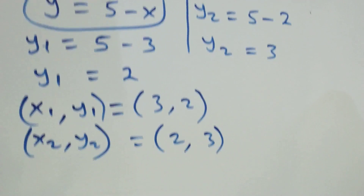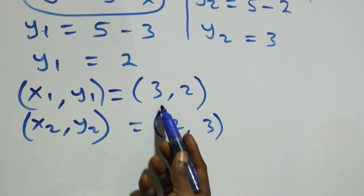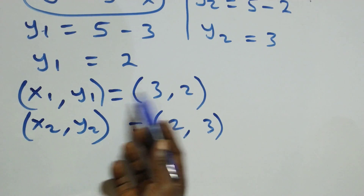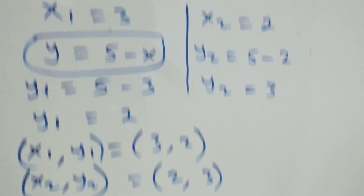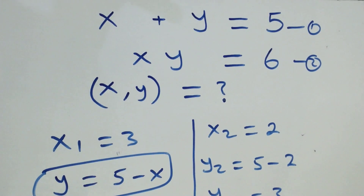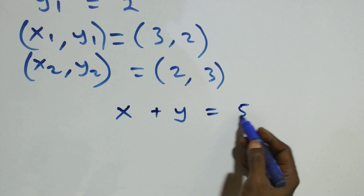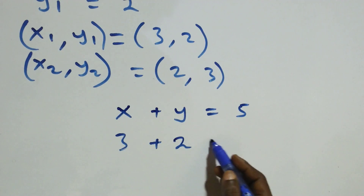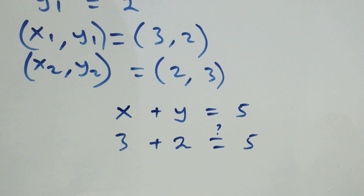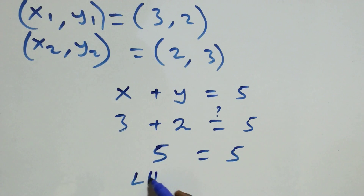Comparing the two solution sets, we notice that the x value in the first solution is the y value in the second, and vice versa. Let's verify using equation one, x plus y equals five. Substituting three plus two gives five, which equals five — left hand side equals right hand side. ✓